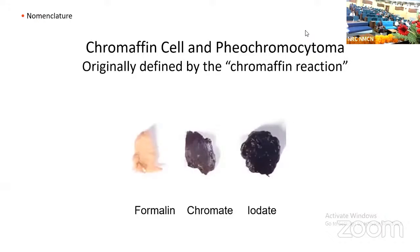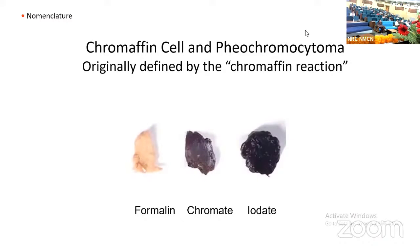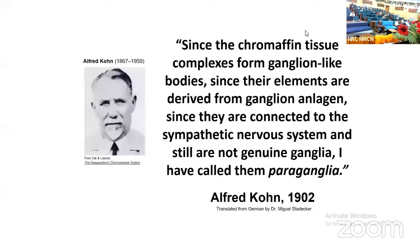Consequently, the term pheochromocyte was invented to describe the color change without connoting a mechanism for it. However, by that time, the term chromaffin cell and chromaffin reaction had firmly taken hold for the normal tissue, while pheochromocyte was later adopted for its neoplastic counterpart. Consequently, we start with the peculiar situation in which a normal cell type goes by one name and its neoplastic counterpart goes by another.